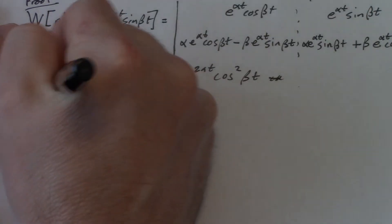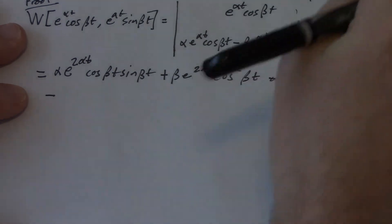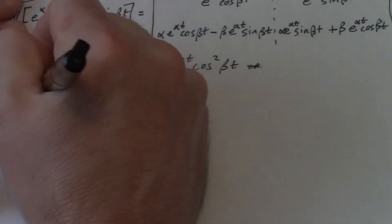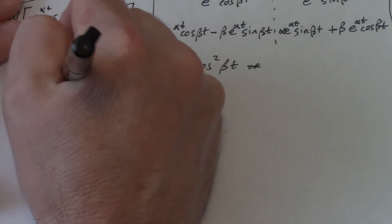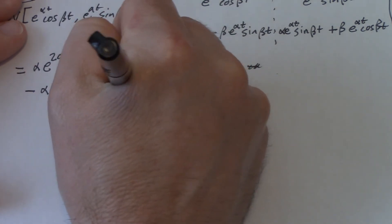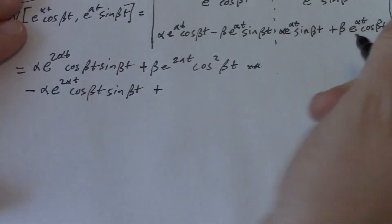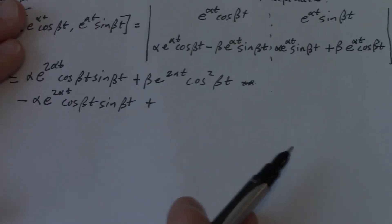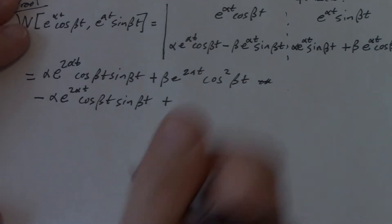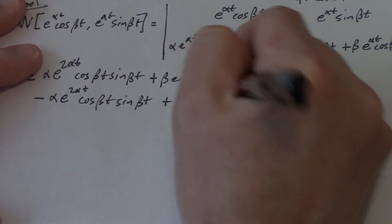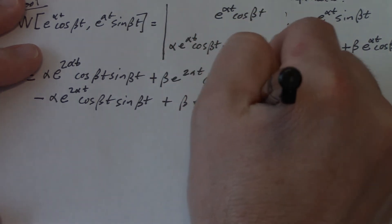Minus this guy times this, and I'm going to have alpha e to the 2 alpha t cos beta t sine beta t, and then I've got minus that times minus that, which is actually plus. Plus beta e to the 2 alpha t sine squared beta t.